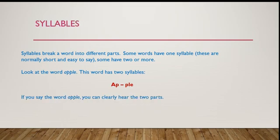Syllables: syllables break a word into different parts. Some words have one syllable — these are normally short and easy to say. Some have two or more syllables. Syllables تقسّم الكلمة إلى أجزاء مختلفة. Some words have one syllable and are simple and easy to pronounce, like the word 'pain' — one syllable — or 'sad' or 'sick.'